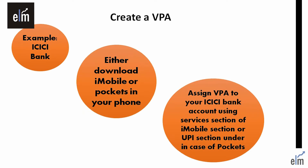How do we create a VPA? For example, let us take ICICI Bank. In the case of ICICI Bank, you need to either download the iMobile app or Pockets on your phone. Then assign a VPA to your ICICI bank account using the Service section of iMobile or the UPI section under Pockets. So if you download iMobile or Pockets, you need to take the following steps for creating your VPA.